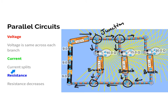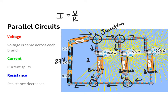In a parallel circuit, current splits at the junction points, which is different from a series circuit where current was always the same. The voltage, however, is going to be the same throughout. If these bulbs are all connected in parallel with each other and with the battery, each light bulb is going to have 27 volts. In a parallel circuit, the voltage is shared — all bulbs have the same common voltage.